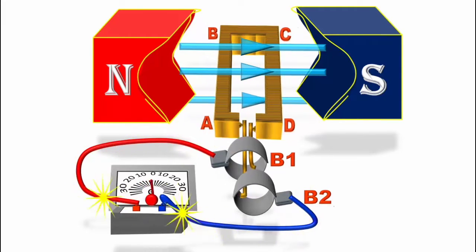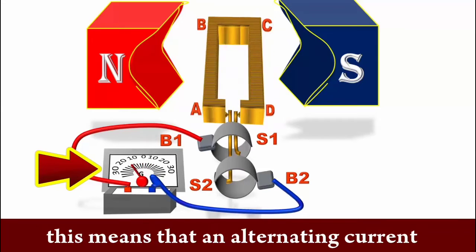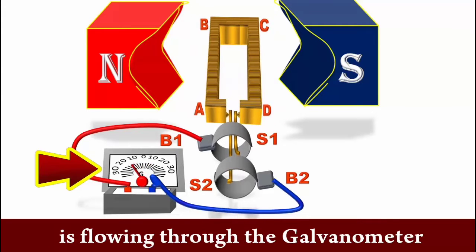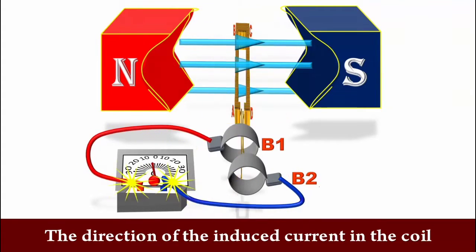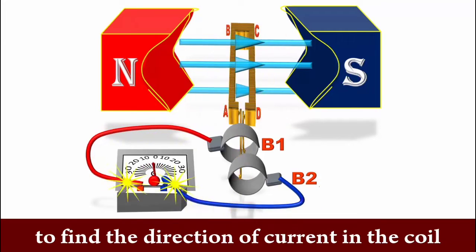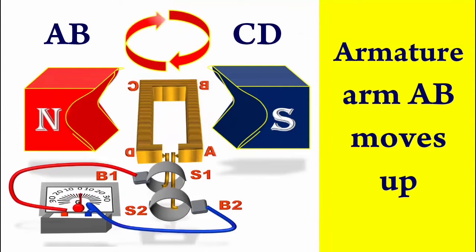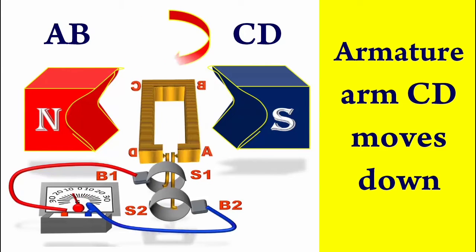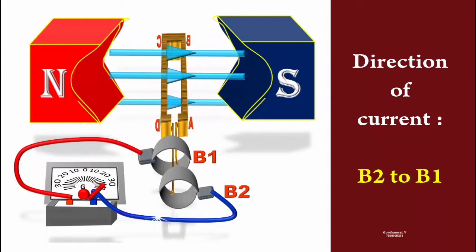The direction of the induced current in the coil can be given by Fleming's right hand rule. Lenz's law can also be used to find the direction of current in the coil. According to Fleming's right hand rule, as the armature undergoes clockwise rotation, arm AB moves up while CD moves down. Current will flow in the direction ABCD, from carbon brush B2 to B1 through the galvanometer.